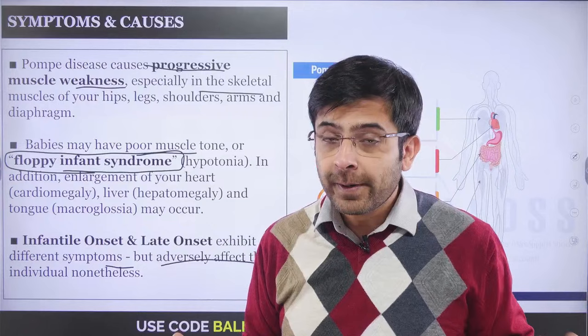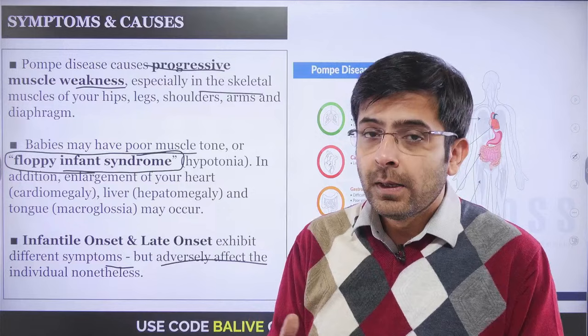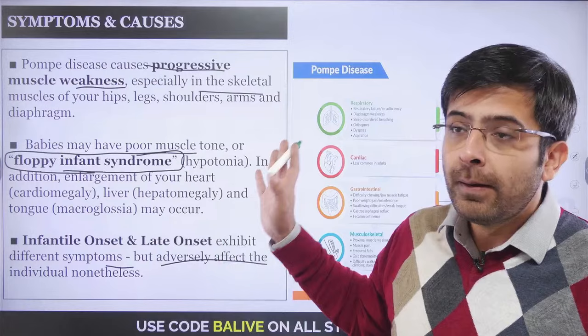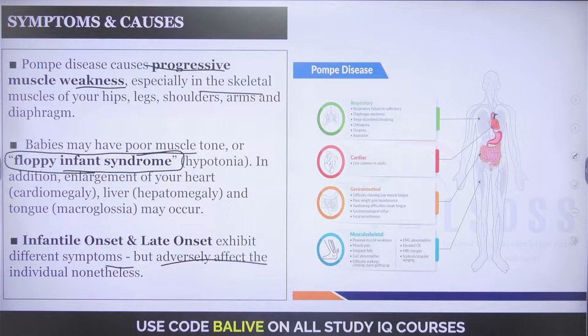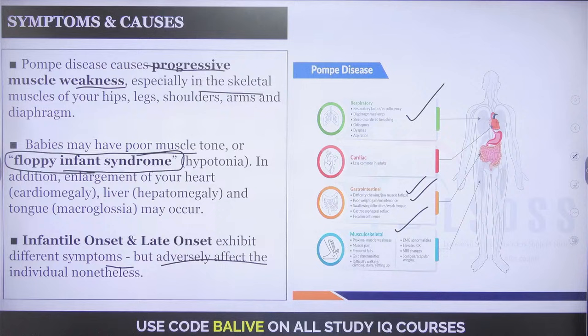In infants, muscle development is adversely hindered. Both types ultimately stem from glycogen accumulation in the body. Effects include respiratory failure — the number one cause of death — cardiac issues, difficulty chewing, poor weight gain, stunting, musculoskeletal problems, and muscle pain. The muscles do not develop to their fullest.